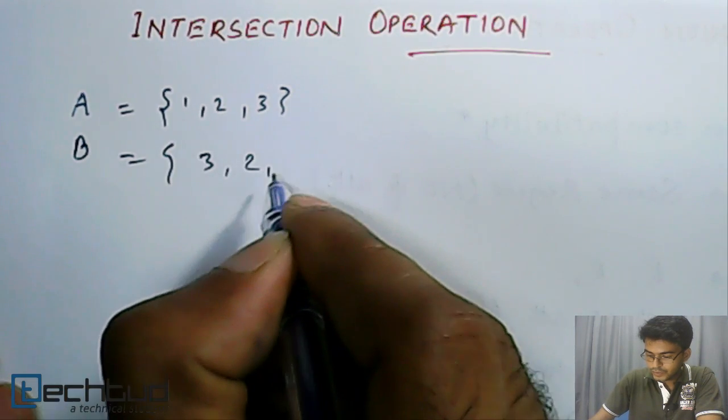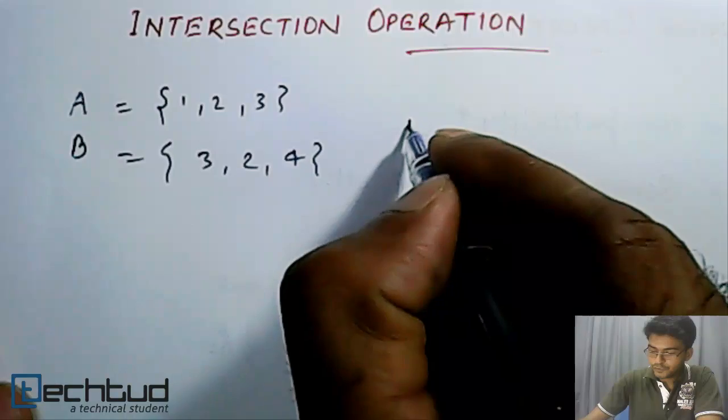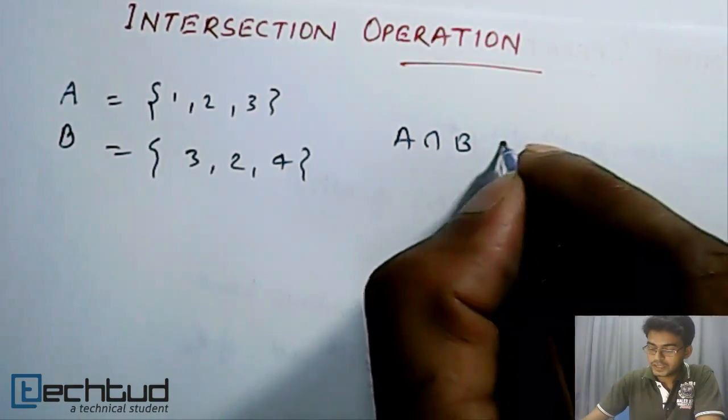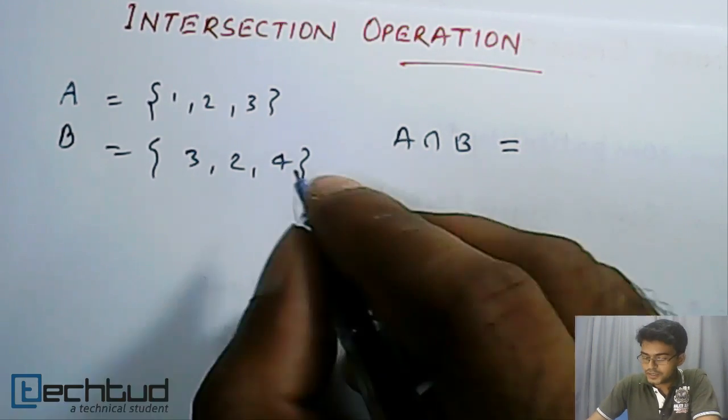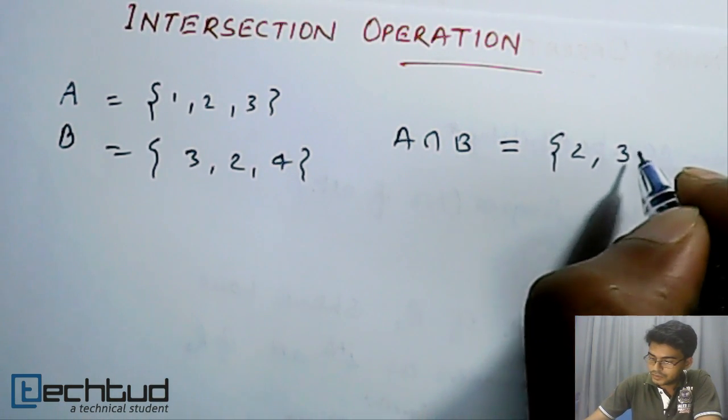...3, 2, and 4. Then what we do if we have to find out A intersection B? We take only those elements which are common to both the sets. That is, it will be equal to 2 and 3.